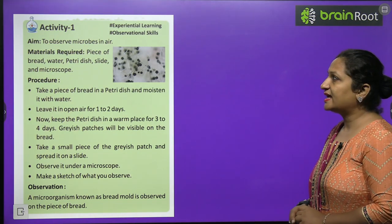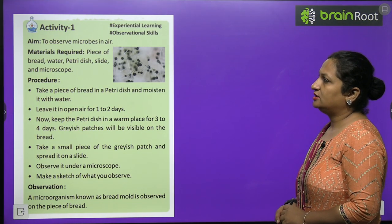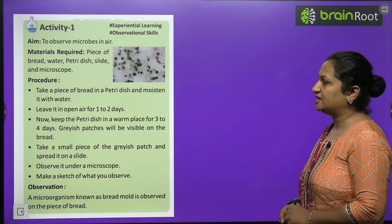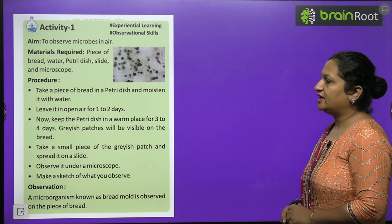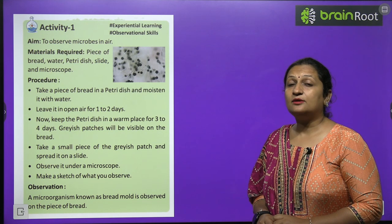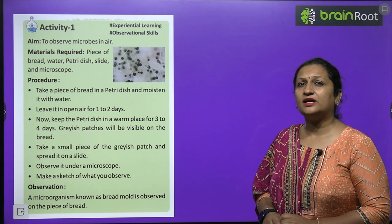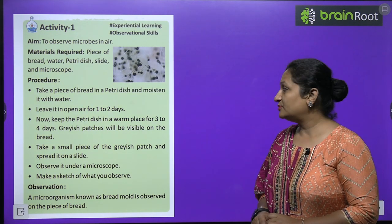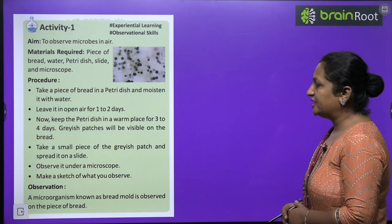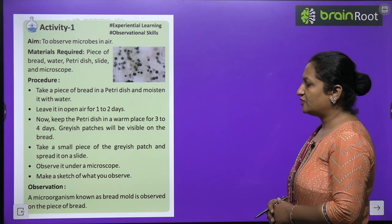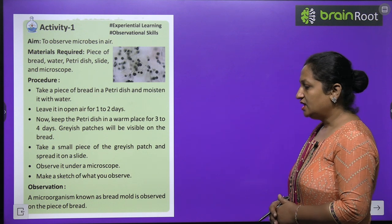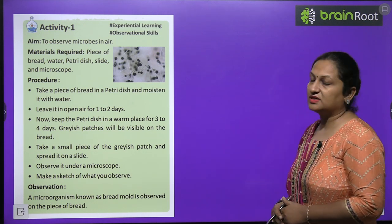Activity: To observe microbes in air. Materials required: a piece of bread, water, petri dish, slide, and a microscope. Procedure: Take a piece of bread in a petri dish and moisten it with water. Leave it open in air for one to two days. You will observe that grayish-colored patches form on the bread — these are microorganisms, specifically fungus, that have grown over the bread. Keep the petri dish in a warm place for three to four days, then take a small piece of the gray patch, spread it on a slide, and observe it under a microscope. A microorganism known as bread mold is observed on the piece of bread.